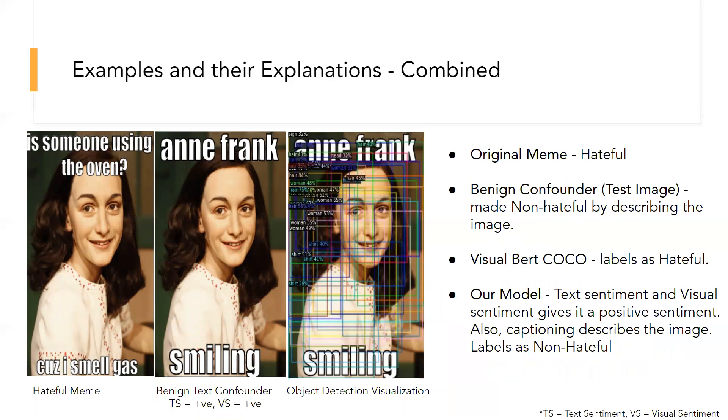Later, we also tried to compare the previous two ideas, using image captioning and the sentiment analysis at the same time. Here's an example that our model benefits a bit of the prediction. The image in the middle is a test image, which is made to be non-hateful. The original BERT Coco predicted the label as hateful, but our text sentiment and the visual sentiment gave us a positive result. Also, captioning describes the image in a similar way as the provided text. In this case, the image captioning and the sentiment analysis both aid the prediction.